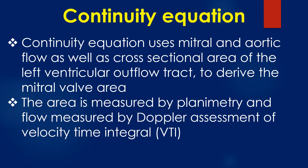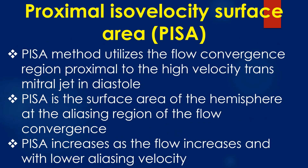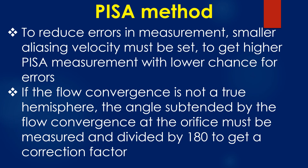An earlier study had shown that mitral regurgitation does not significantly change the estimation of mitral valve area by the pressure half-time method. The continuity equation uses mitral and aortic flow as well as the cross-sectional area of the left ventricular outflow tract to derive the mitral valve area. The area is measured by planimetry and flow measured by Doppler assessment of velocity-time integral. The proximal isovelocity surface area, or PISA, method utilizes the flow convergence region proximal to the high-velocity transmitral jet in diastole. PISA is the surface area of the hemisphere at the aliasing region of the flow convergence. To reduce errors in measurement, a smaller aliasing velocity must be set to get a higher PISA measurement. If the flow convergence is not a true hemisphere, the angle subtended by the flow convergence at the orifice must be measured and divided by 180 to get a correction factor.